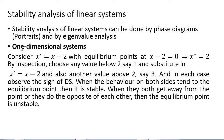If you have a one-dimensional system, suppose you have x' = x - 2, with the equilibrium point at x - 2 = 0, which is x = 2. By inspection, choose a value below 2, say 1, to find what is happening on the left-hand side of this equilibrium point. Substitute it into the equation, and also choose another value greater than 2 to determine what is happening on the right-hand side. In each case, observe the sign of this dynamical system.